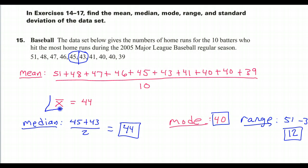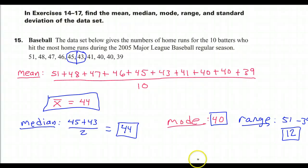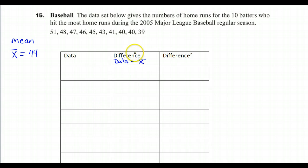So we found the mean, the median, the mode, and the range. Now it is time to find the standard deviation. To do this, we're going to need the mean, which was 44. I find it helps to create a table to keep yourself organized. We're going to have three columns: the data, then the difference where we do data minus the mean, and then we're going to square all those differences.